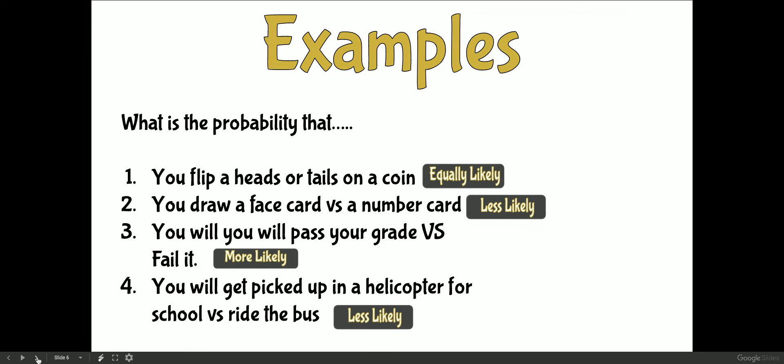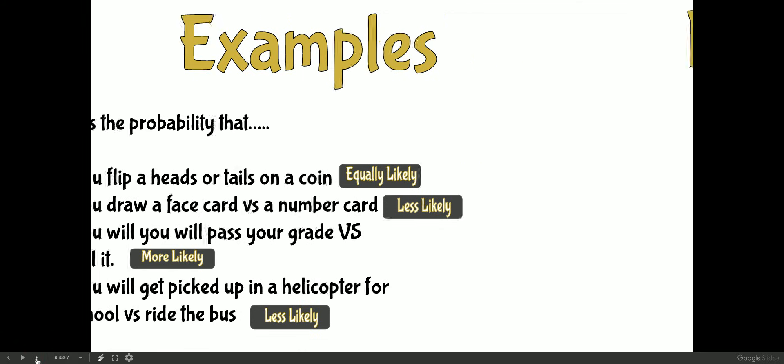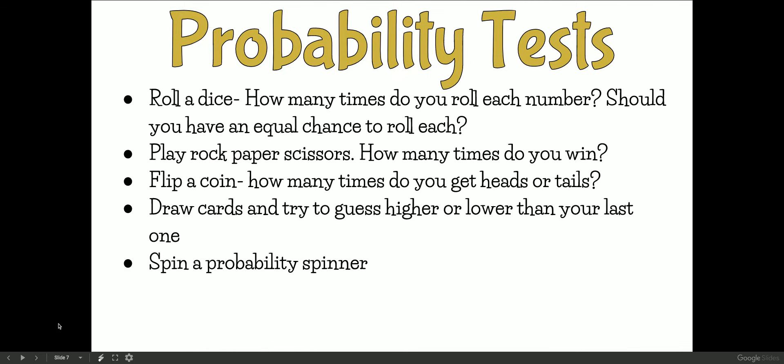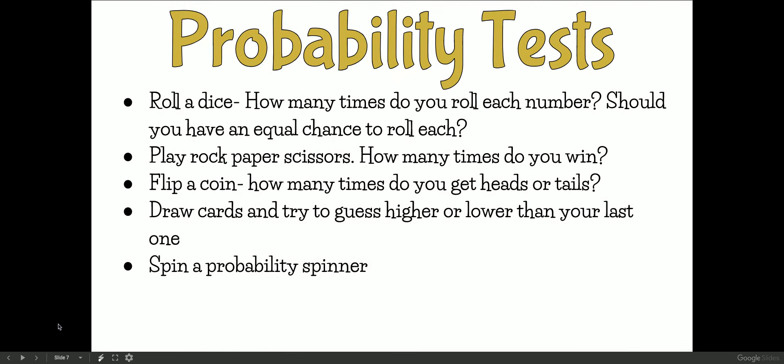So what are some probability tests we can do? The first one you can do is roll a dice. If you roll your dice, how many times do you roll each number? Should you have an equal chance to roll each? In theory yes - your dice has one to six on it or one to ten on it, you should have an equal chance of rolling each one, but do you? If you rolled it ten times, would you roll each one the same number? Play rock paper scissors - how many times did you win? Flip a coin - how many times you get heads or tails? Draw a card and try to guess if your next one will be higher or lower than your last one, or take a spin on a probability spinner.